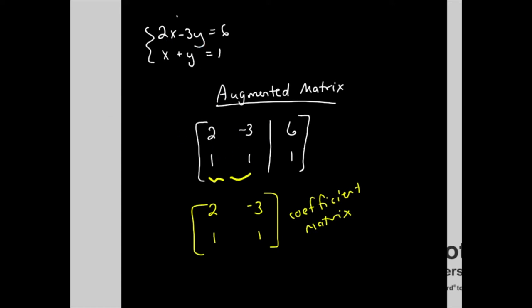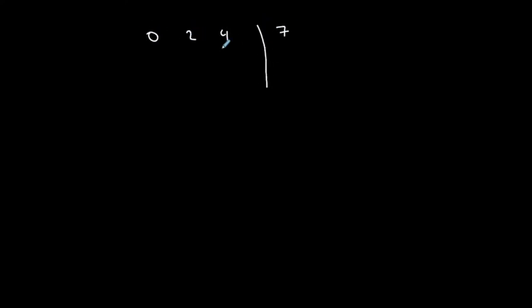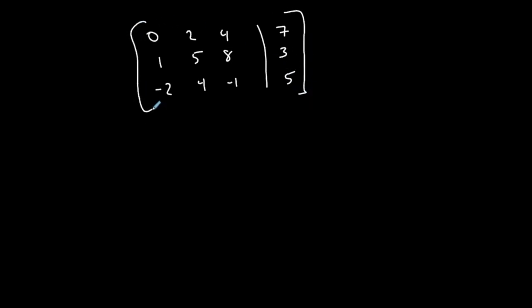Now let's go the other direction. If I start with an augmented matrix — say, with values zero, two, four, seven in the first row; one, five, eight, three in the second; and negative two, four, negative one, five in the third — I want to write the system it represents. This is my x column, my y column, my z column, the equal sign, and my constant column.